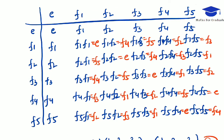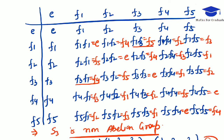Now you can see that F1∘F3 is not equal to F3∘F1, which means S3 is a non-abelian group. So this is the end of the video. In the next video, you will see more important results related to this group, and you will see what is the S4 group. Thank you.